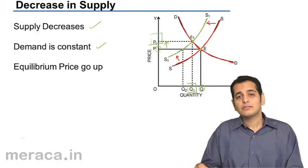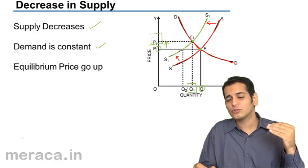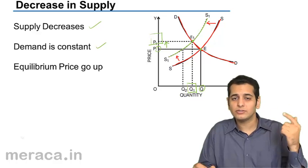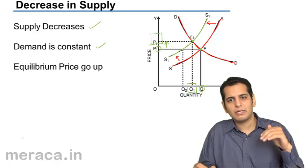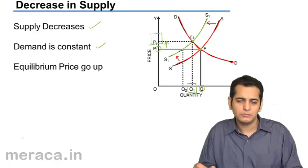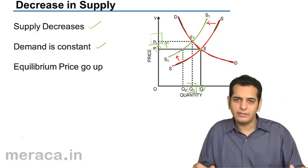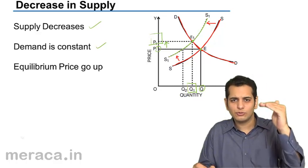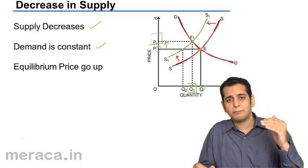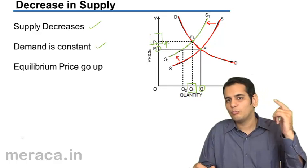We have studied the four cases individually. In the first case, supply was constant but demand was increasing — the price went up. In the second case, supply was constant but demand decreased — the price came down. In the third case, demand was constant but supply increased — the price came down. And finally, in the fourth case, supply decreased with demand remaining constant — the equilibrium price went up.